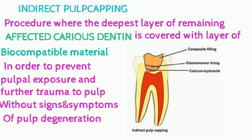The main difference between direct and indirect pulp capping is: in direct pulp capping, the medicament is placed directly over the vital pulp. In indirect pulp capping, the medicament is placed on the affected carious dentin.